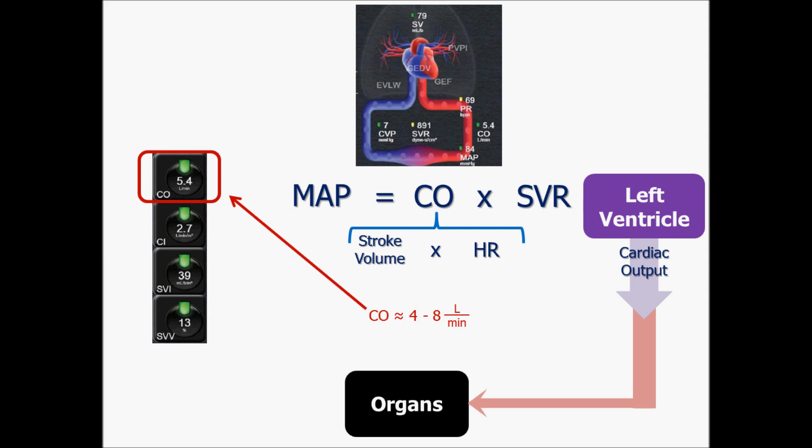Something to keep in mind is that people come in all sorts of shapes and sizes. And so if we want to get a more accurate evaluation of cardiac output, we can divide this by the person's body surface area. And that way we take size into consideration. And this results in a parameter called cardiac index.